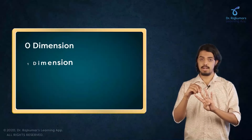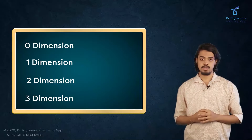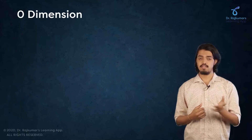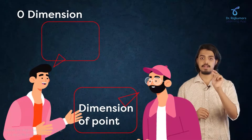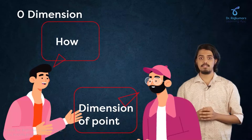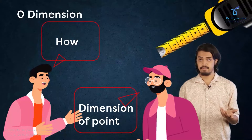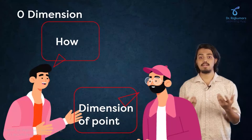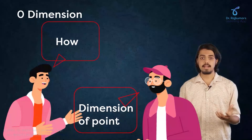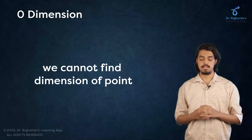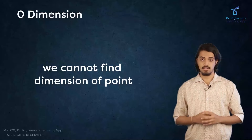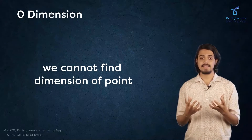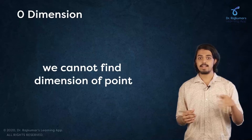We have four dimensions: zero dimension, one dimension, two dimension, and three dimension. Consider a point — if someone asks you to find its dimension, you have no ruler or tape to measure it. We cannot find any length or measurement for a point, and thus it is known as zero dimension. A point has no measurement, no length, and there is no way to measure it.